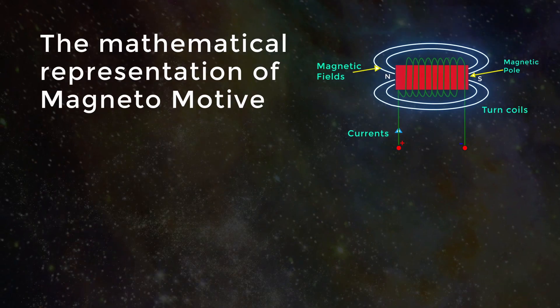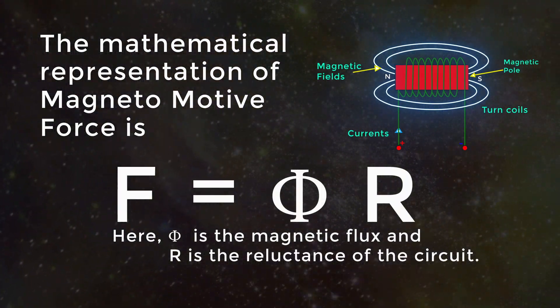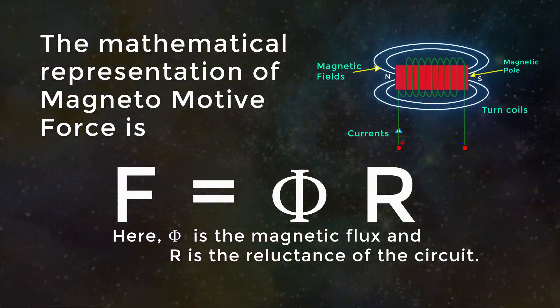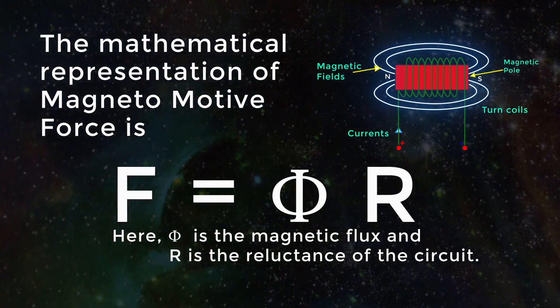The mathematical representation of magnetomotive force is F equals Phi R. Here Phi is the magnetic flux and R is the reluctance of the circuit.